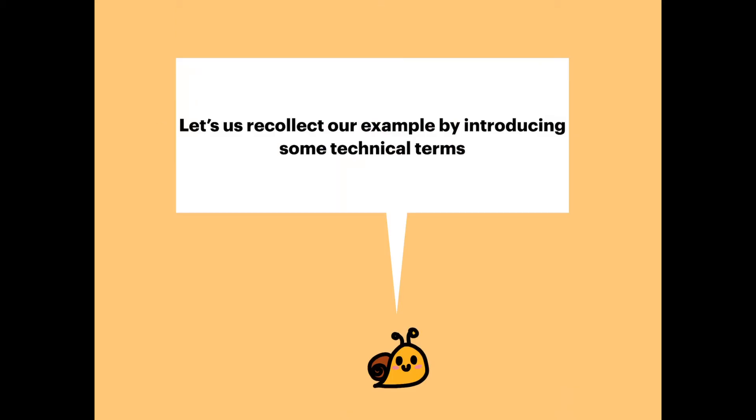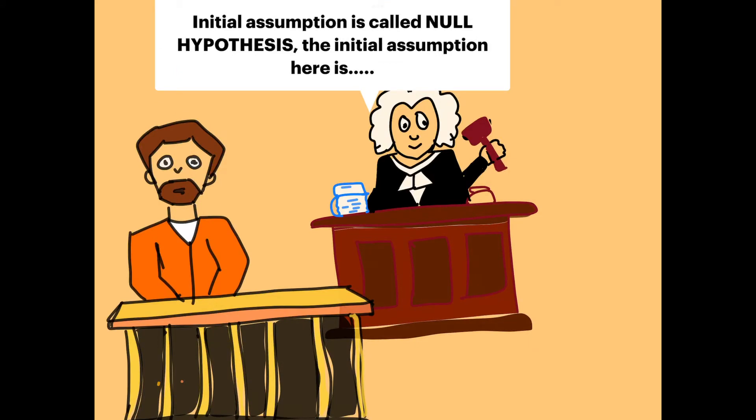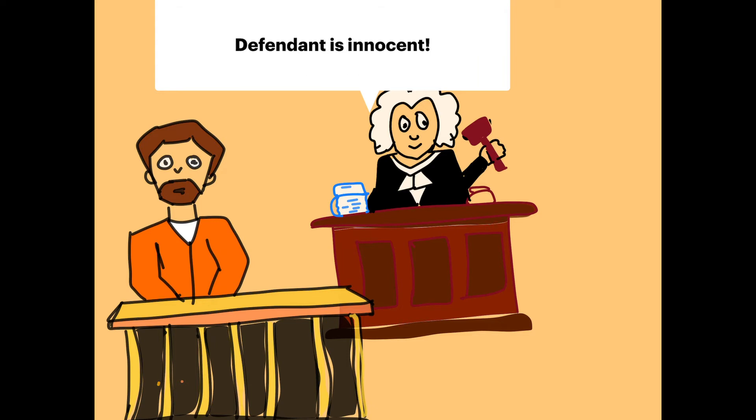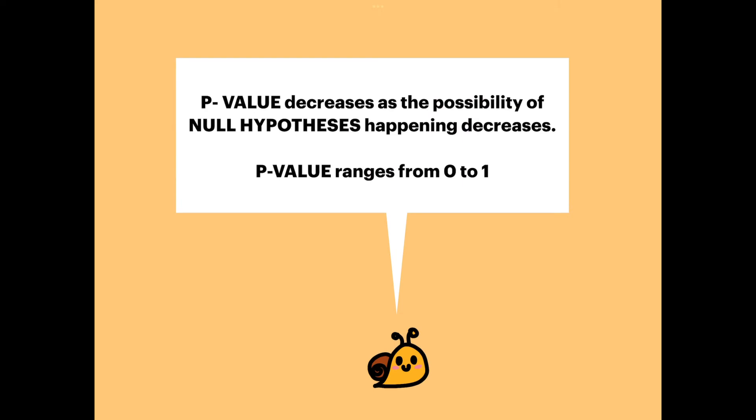Let's recollect our example by introducing some technical terms. The initial assumption is called the null hypothesis. The initial assumption here is the defendant is innocent. The alternative hypothesis is the desired outcome. The alternative hypothesis here is defendant is guilty.